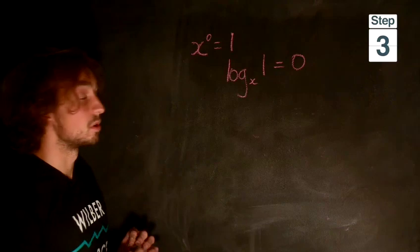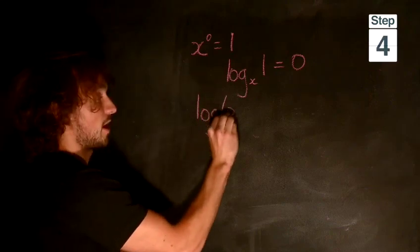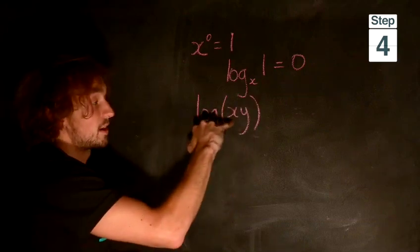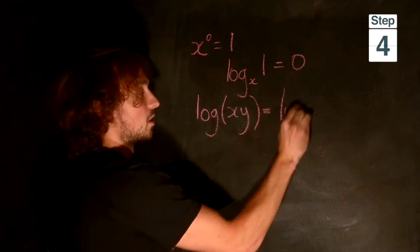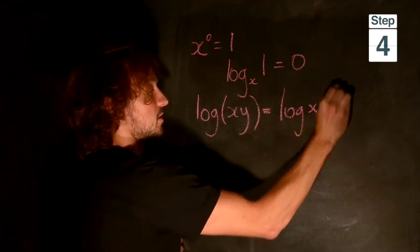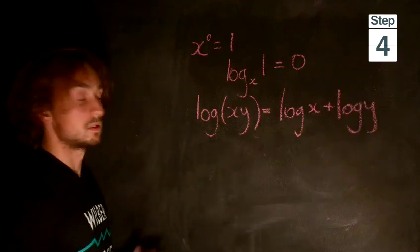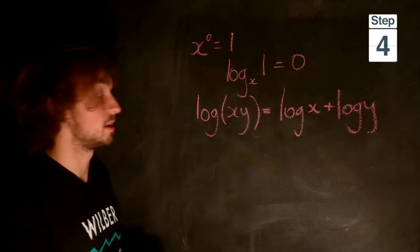A couple of identities with logarithms. We have logarithm of xy, the log of x multiplied by y. This is the identity log x plus log y. When they're multiplied together in the brackets, they add outside the brackets.